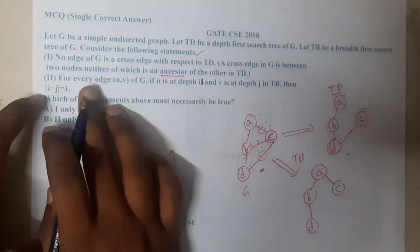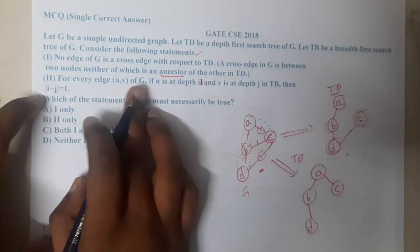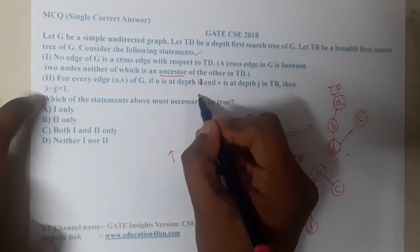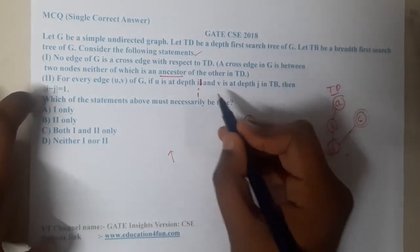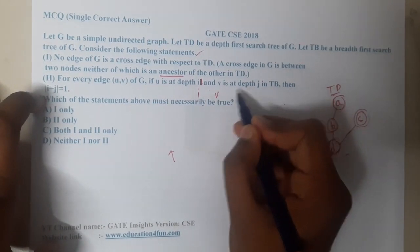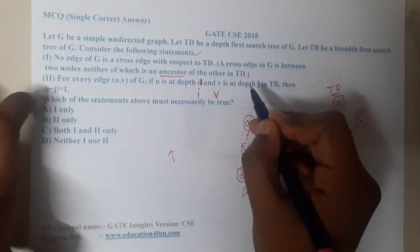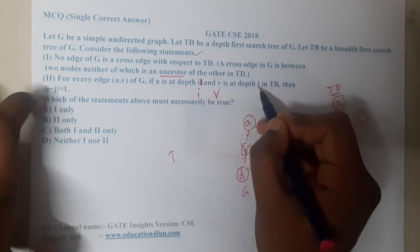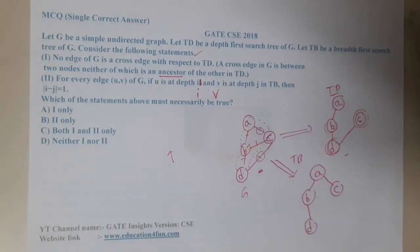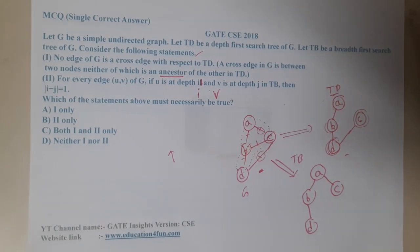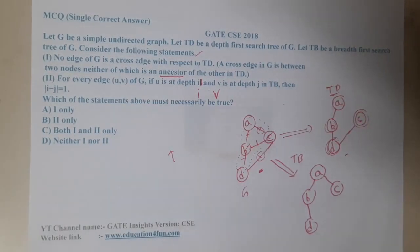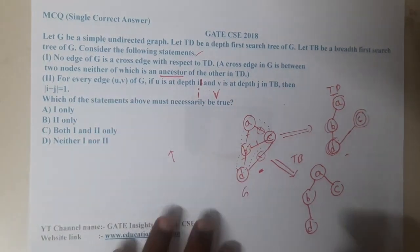Statement two: for every edge (U, V) of G, if U is at depth I and V is at depth J in TB, then |I − J| = 1. They are saying the depth difference is always one.